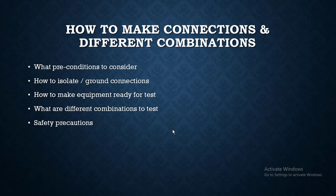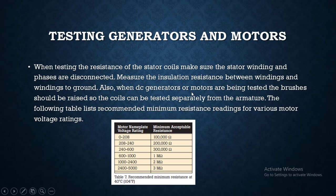When testing generators and motors, make sure the stator winding and phases are disconnected. Measure the insulation resistance between winding and winding to ground. When DC generators or motors are being tested, the brushes should be raised so the coils can be tested separately from the armature.